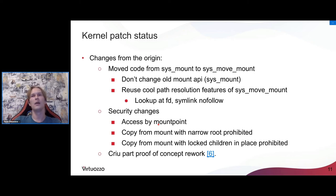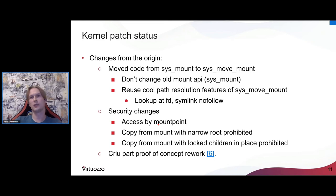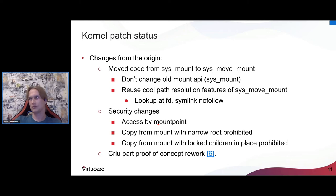The current mount v2 implementation still doesn't use those features, but it would simplify things quite a bit when we do. We also did extra security changes from the original patch. We added a check that mounts can be accessed only by mount points — both the destination and the source mounts. We also checked that we can't copy the sharing from the narrow root mount, and we can't copy the sharing from the mount with locked children which cover the root of the destination mount. Generally, it means that we prohibit getting more propagation than the user can actually see at this point.